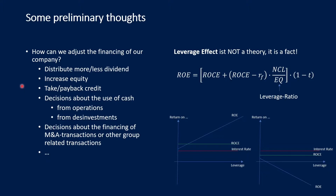Here are some preliminary thoughts about the financing of companies. How can we adjust the financing of our company? Of course this is not as easy as it seems, but we have a lot of levers in our hand. First of all, we could distribute more or less dividend. If we distribute more dividend, we do not strengthen our equity and will need more debt financing in the future. If we distribute less dividend, we can retain our earnings and strengthen our equity, and accordingly need less debt in the future.